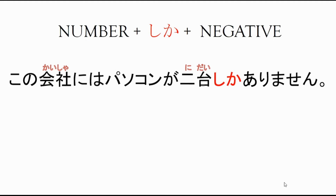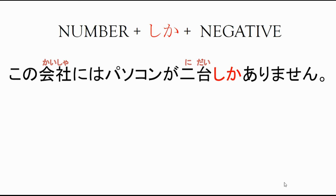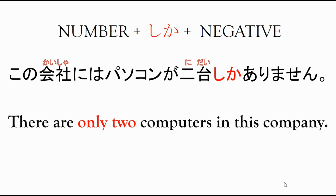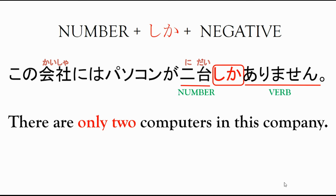Next example: kono kaisha ni wa pasokon ga nidai shika arimasen. This means there are only two computers in this company. The number here is nidai — that's the counter for machines or computers. We use shika to state 'only' or 'as few as', and the verb is in the negative. So nidai shika arimasen means 'only two'.